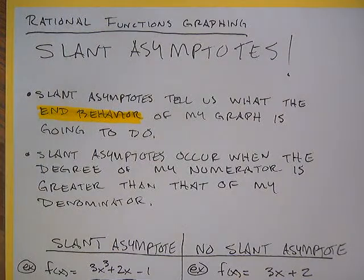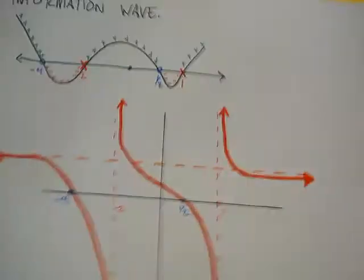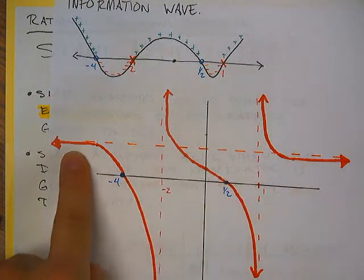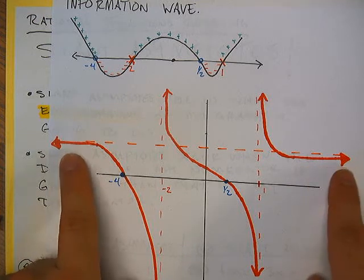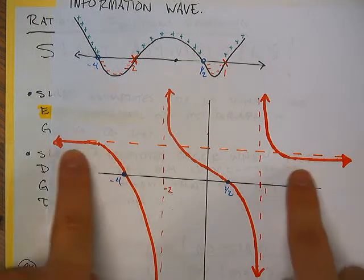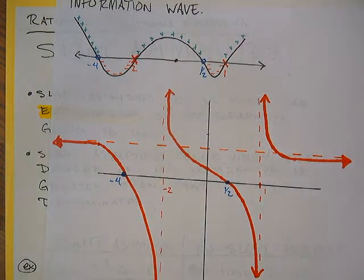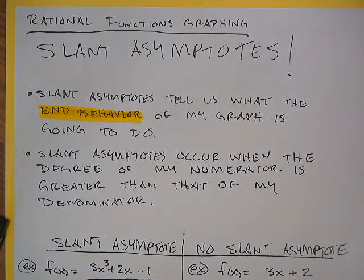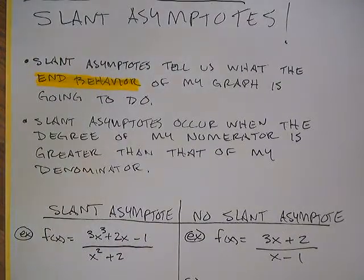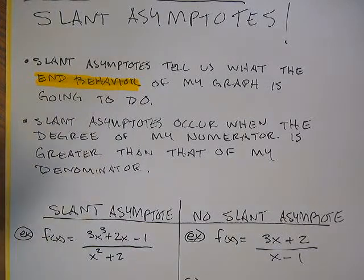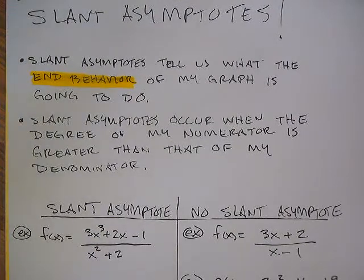If you remember, for horizontal asymptotes, our asymptotes usually looked like perfectly horizontal lines, and our end behavior always followed along that horizontal asymptote — so as we got far away from the center, we started to follow along it. Horizontal asymptotes show up when the degree of your numerator is either equal to the degree of the denominator, or the degree of the numerator is actually less than the degree of the denominator. There were a few special cases, so I recommend you go back and look at the previous videos.